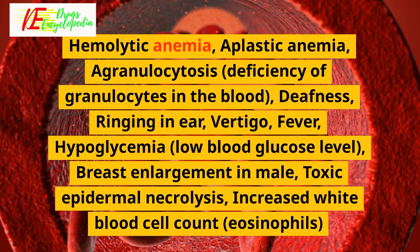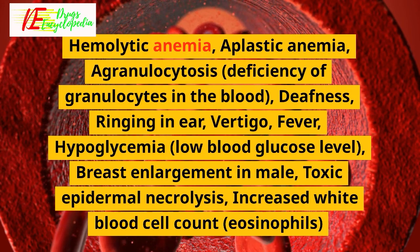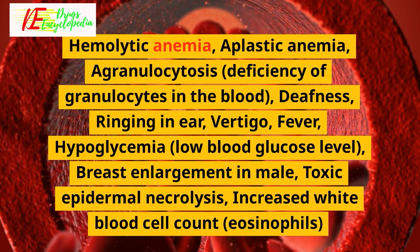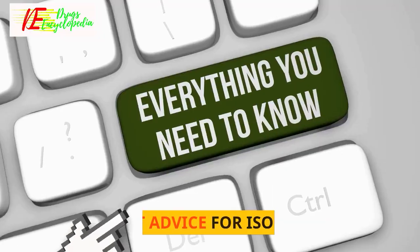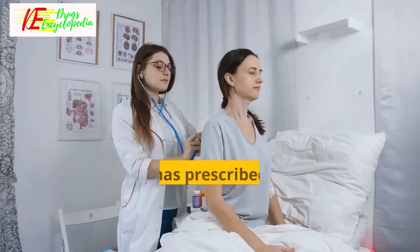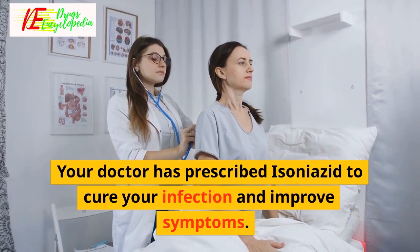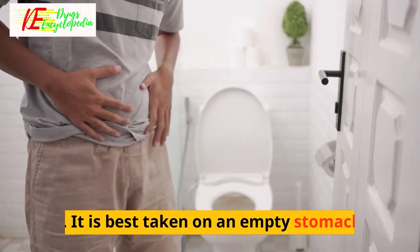Severe side effects of isoniazid: hemolytic anemia, aplastic anemia, agranulocytosis (deficiency of granulocytes in the blood), deafness, ringing in ear, vertigo, fever, hypoglycemia (low blood glucose level), breast enlargement in males, toxic epidermal necrolysis, and increased white blood cell count (eosinophils).